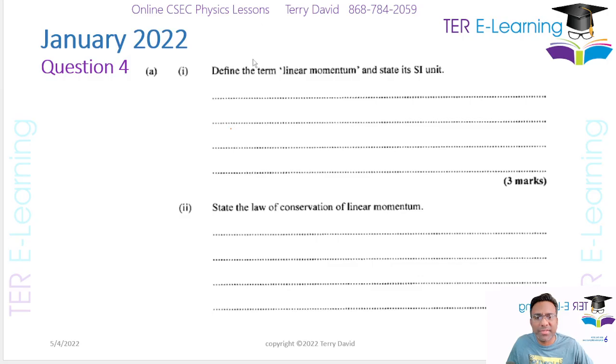So first things first, linear momentum. Linear momentum is the product of a body's mass and velocity. So that is what linear momentum is and we normally write that as P is equal to M multiplied by V.